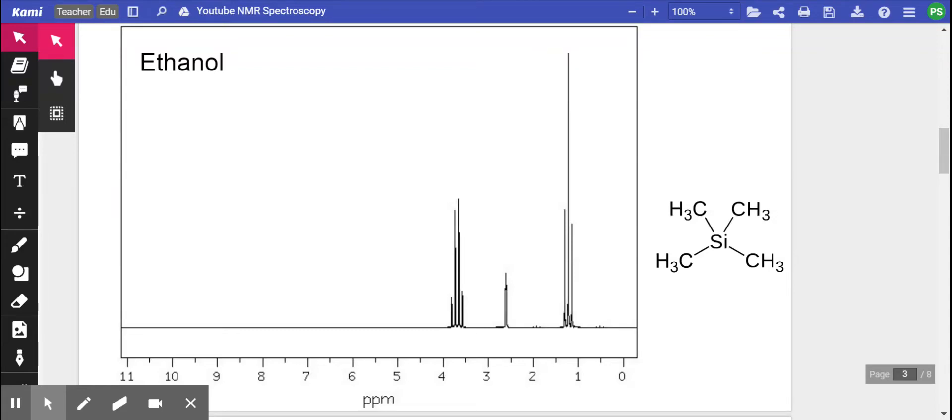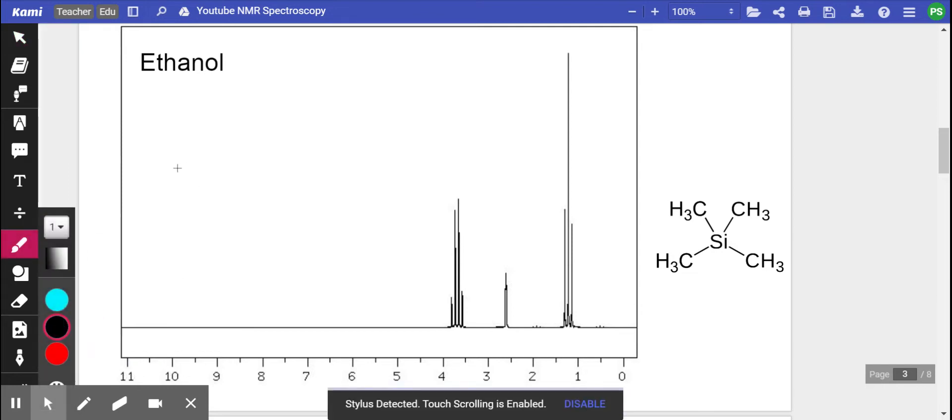Okay, welcome to part two where we're going to continue analyzing NMR spectroscopy. Now we left off looking at this spectrum of ethanol, so just to get started let us draw ethanol out to see how many hydrogens there are and how they differ and appear in different places.